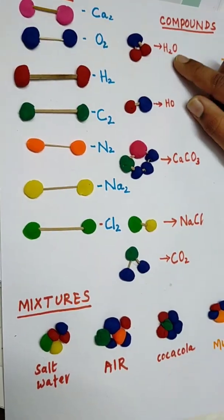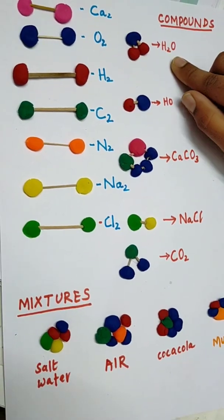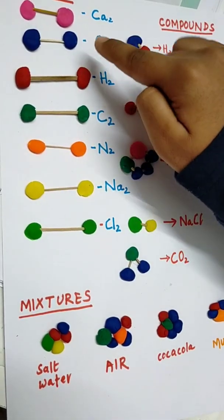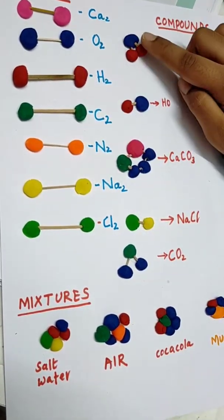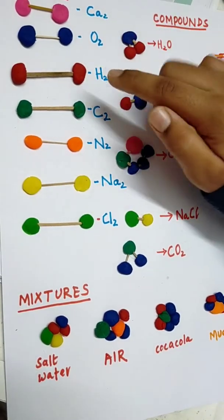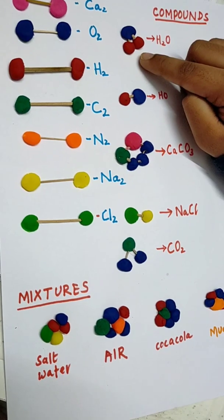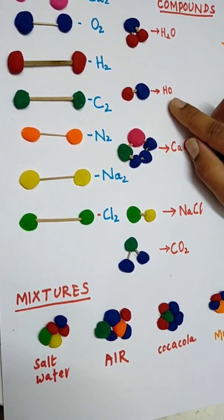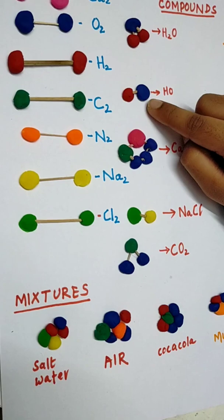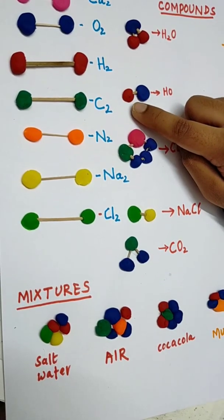Water composition is H2O. I have taken blue for oxygen, so one oxygen atom, and I have taken red for hydrogen, so here two hydrogen atoms. Hydroxide composition is HO, so one oxygen atom and one hydrogen atom.